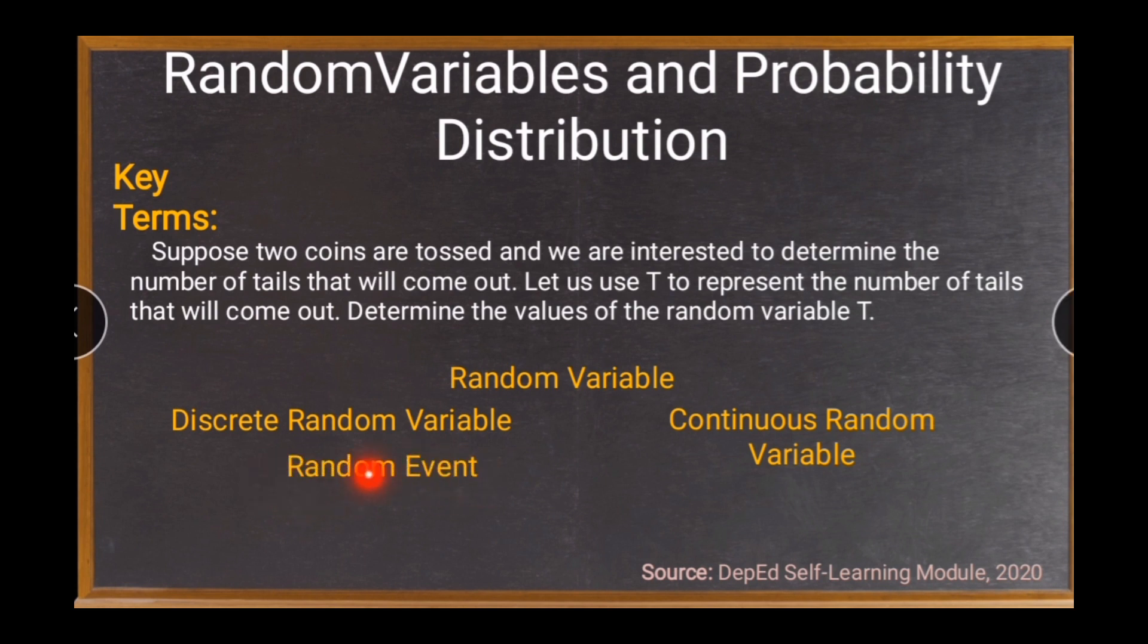Another, random event. I have mentioned this one. From this given, tossing two coins is an example of a random experiment. Another, sample space. I have also mentioned this one. These are the set of possible values. So later, you will know that the number of tails from tossing two coins can be enumerated in here. And finally, we have probability distribution. So this distribution includes values of a random variable and also the probability of occurrence. So later, all of this will be illustrated.